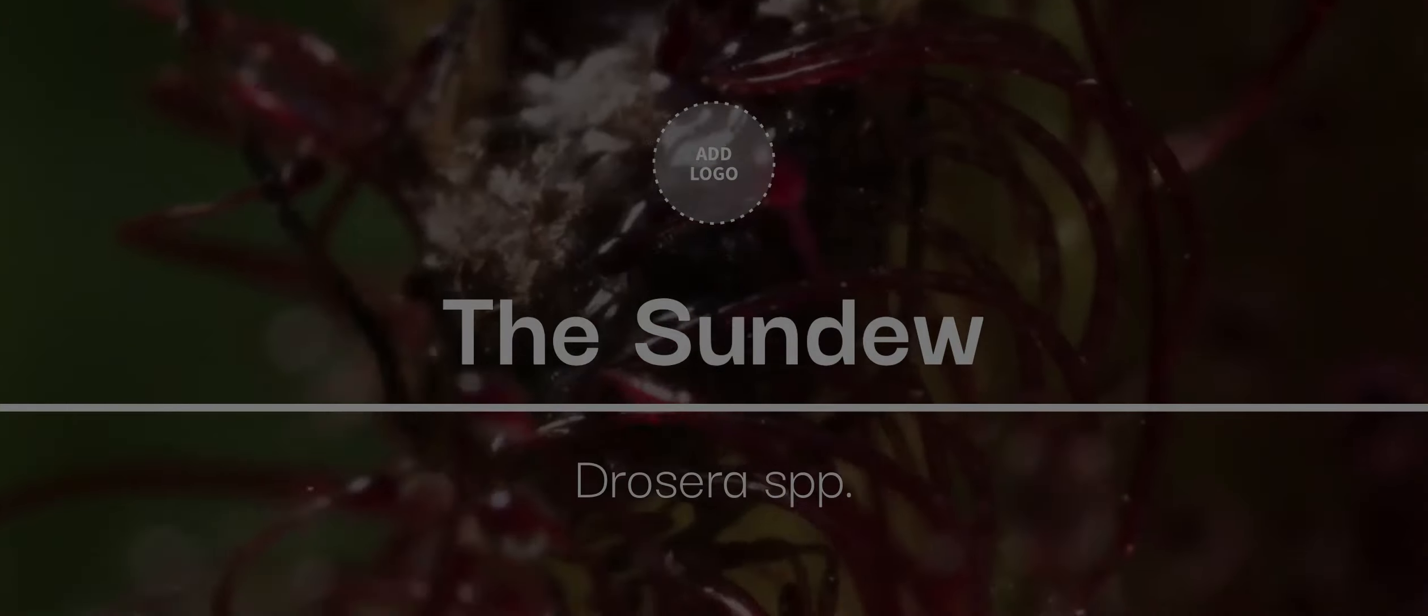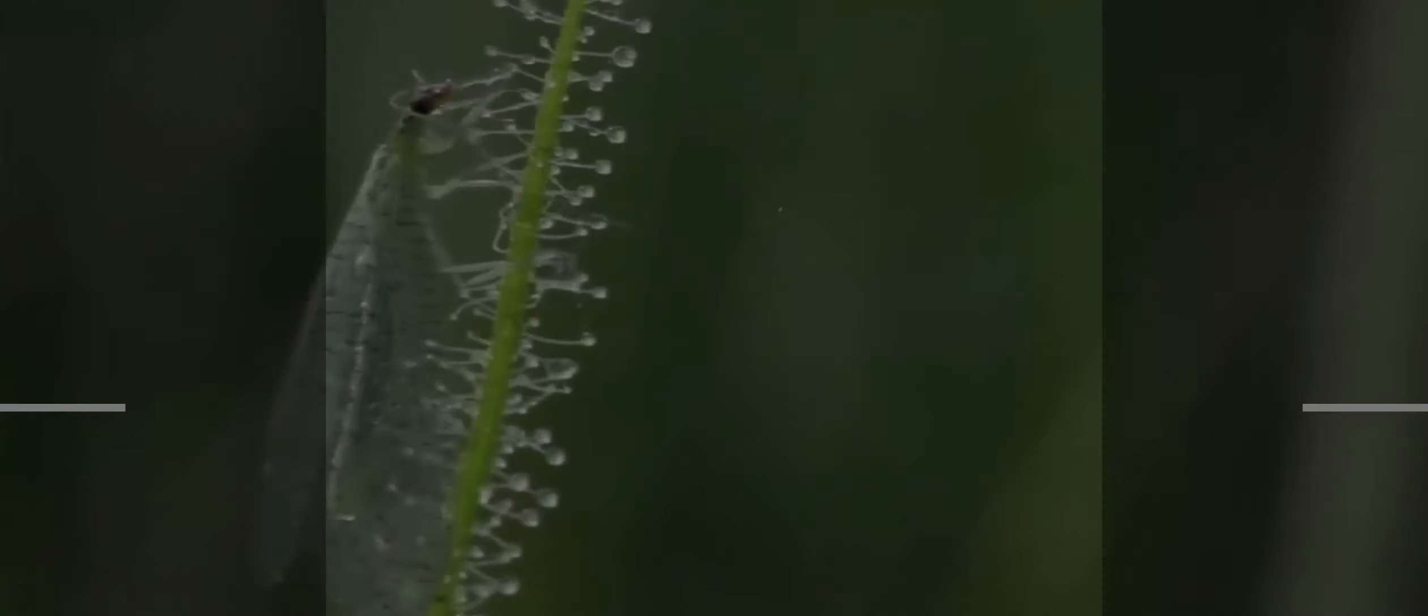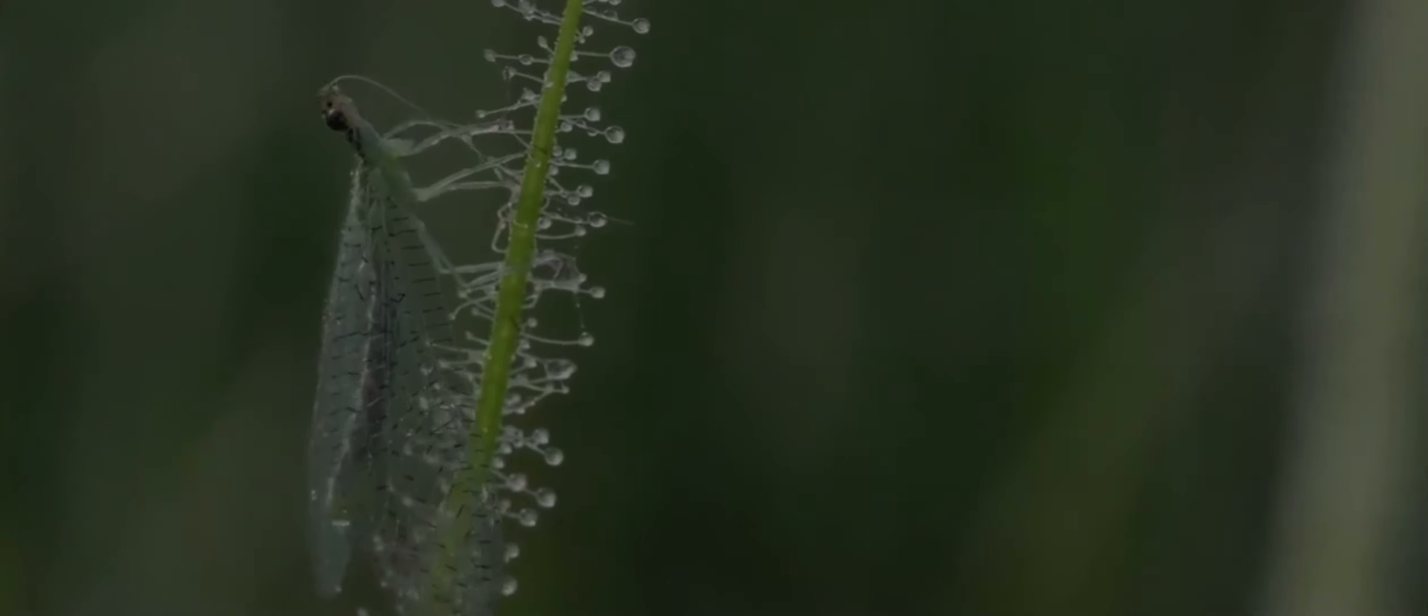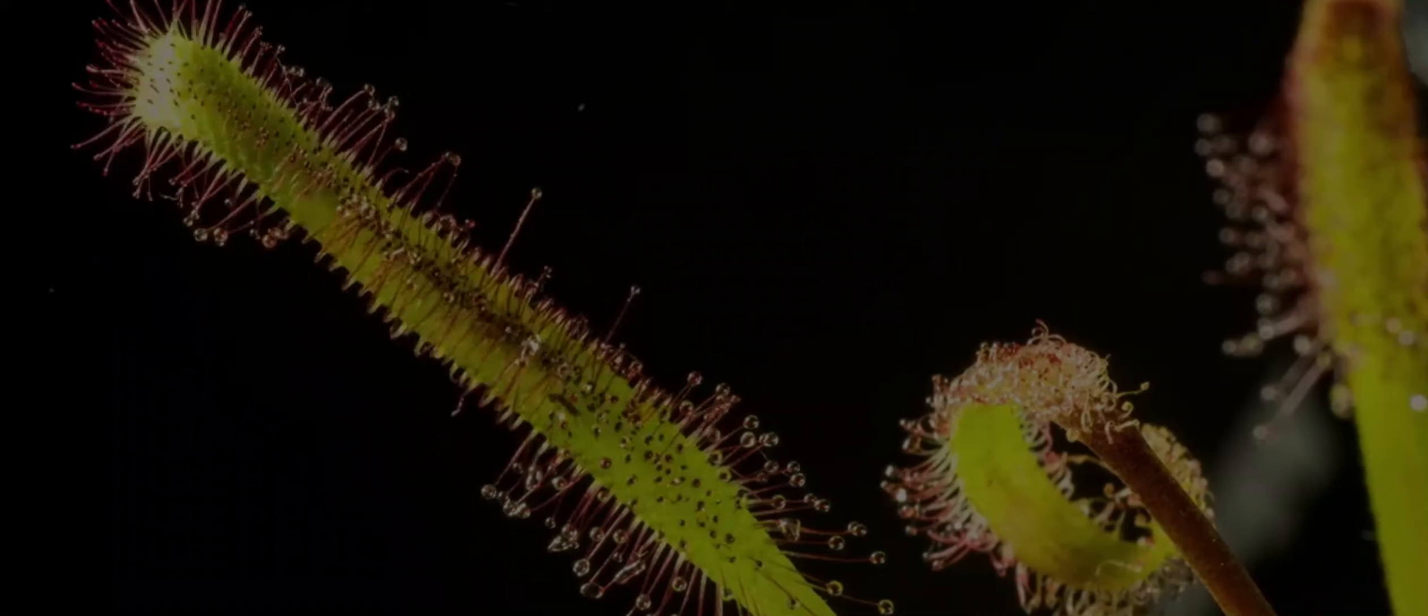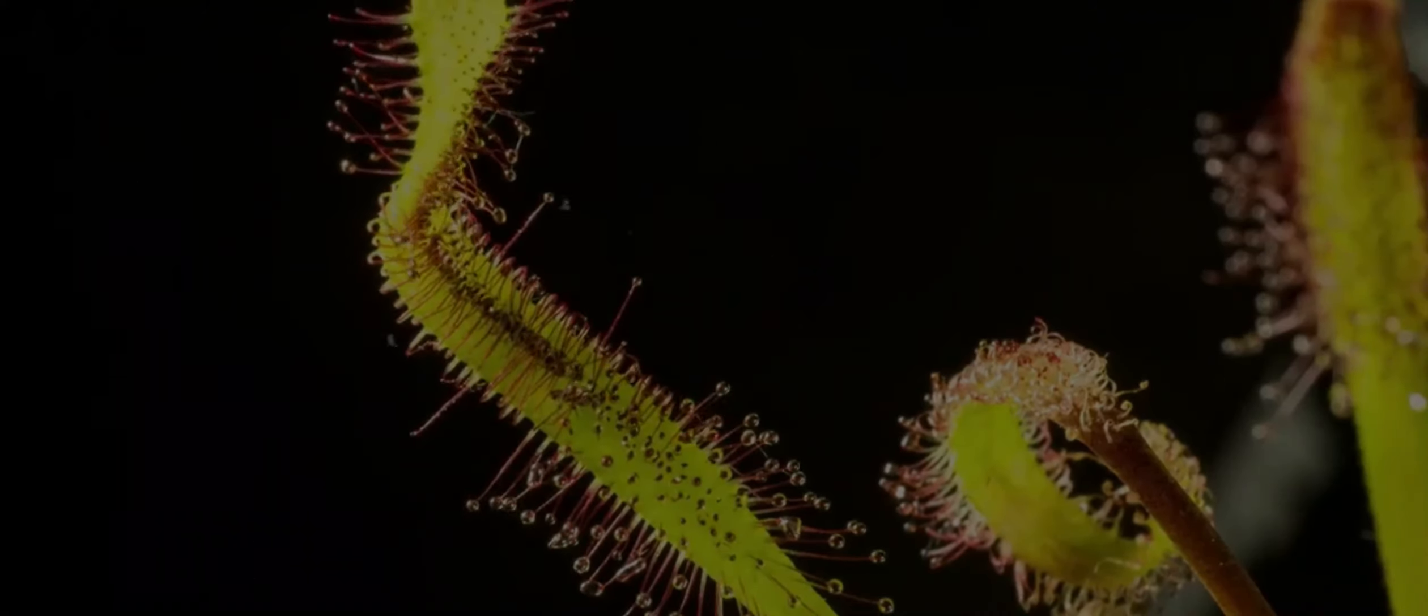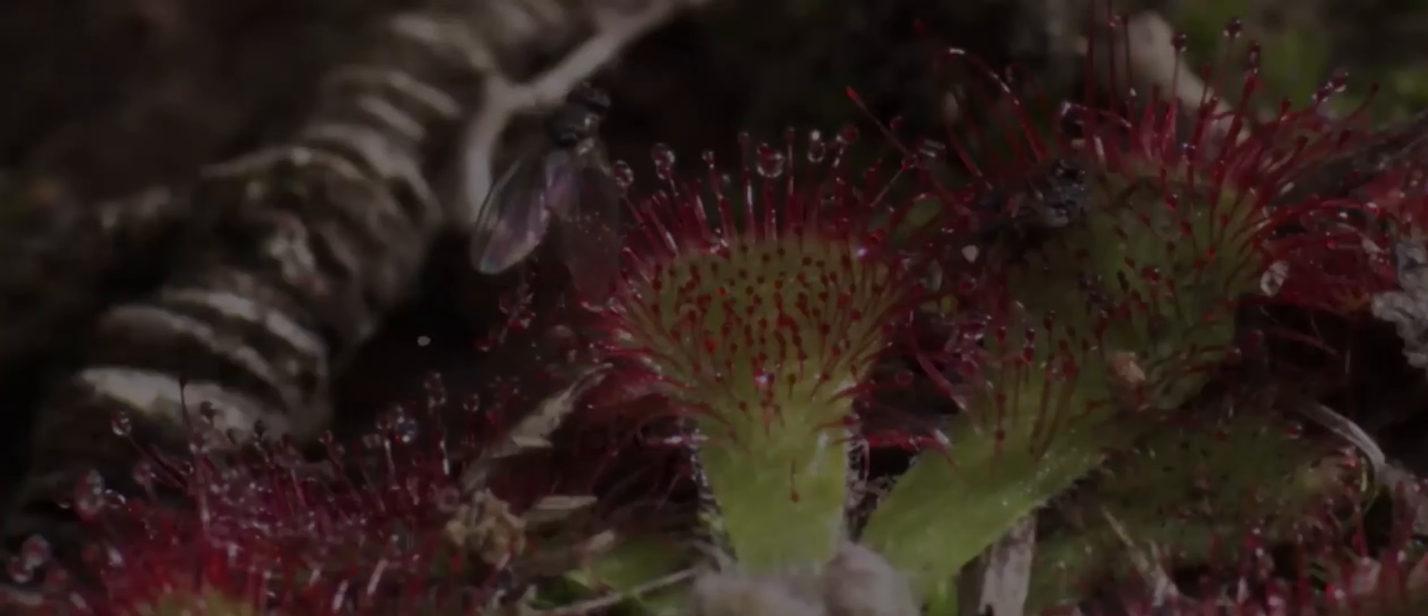3. The Sundew, Drossera SPP. These delicate-looking plants are covered in glistening tentacles. Once an insect lands, the tentacles constrict, smothering and absorbing the unfortunate victim.